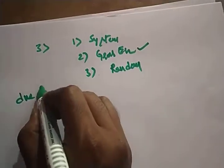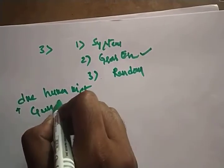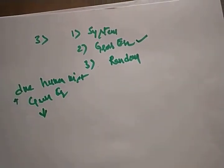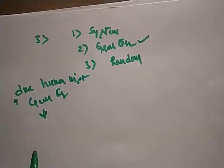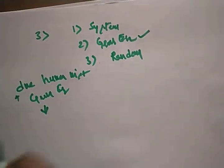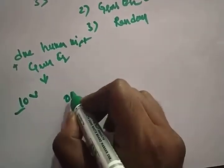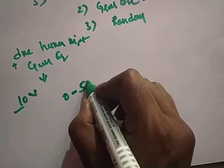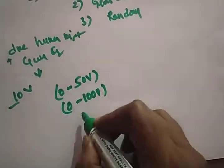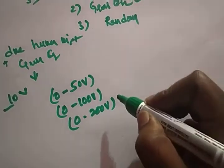Gross errors are due to human mistakes — carelessness while taking readings will definitely introduce error. Another human mistake is not knowing what type of instrument to choose. For example, if you want to measure 10 volts, you have a 0-to-50 volt instrument, a 0-to-100 volt instrument, and a 0-to-200 volt instrument. If you don't know which one to choose and blindly take the 0-to-200 volt instrument, you will get an error.